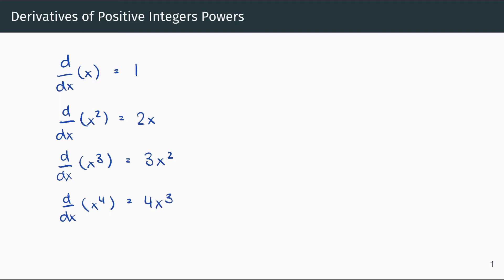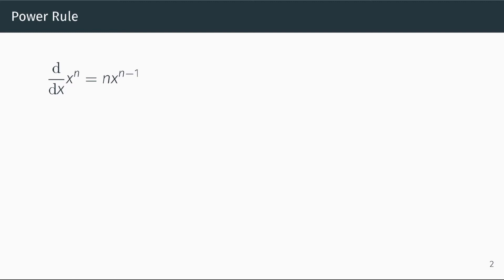Can you spot the pattern? If you can't, remember that x is the same thing as x to the power of 1. The pattern is known as the power rule. The power rule states that the derivative of x to the power of n with respect to x is n times x to the power of n minus 1. Another way of thinking about this is: bring the power to the front, then subtract 1 from the power.